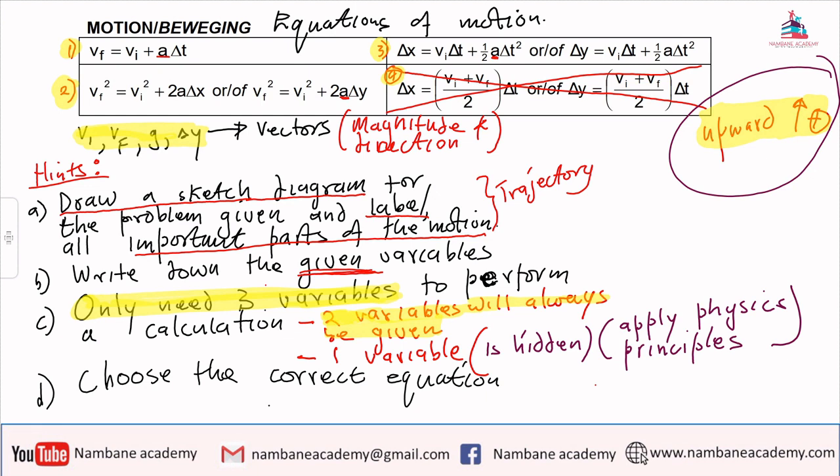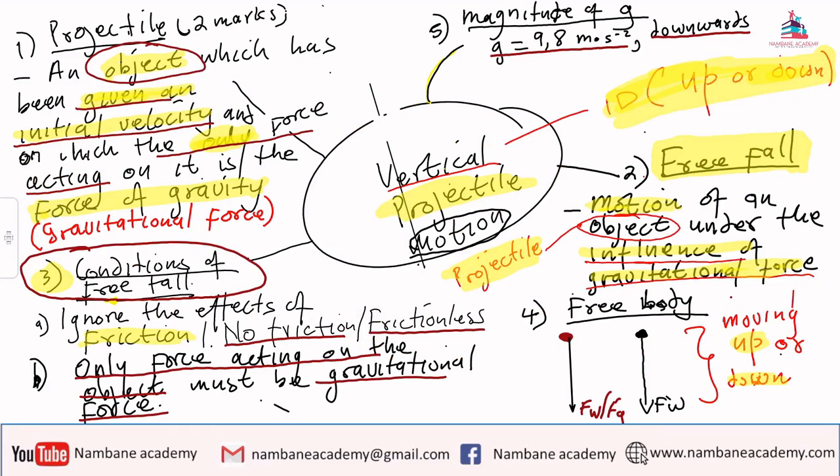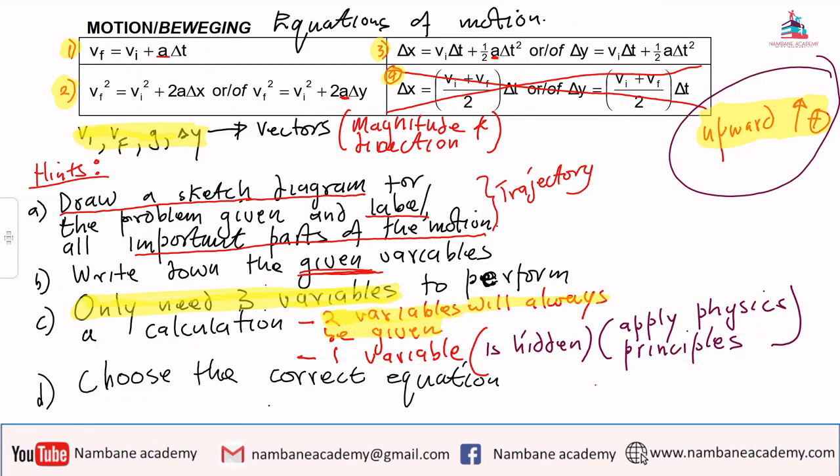Equation number four does not accommodate the g - the gravitational acceleration. A projectile is an object in which the only force acting must be the force of gravity, free fall motion under the influence of gravitational force. All the equations we use must somehow force us to work with the magnitude of g. Equation four works at times and at times it doesn't, so I want us to eliminate it because it creates confusion.